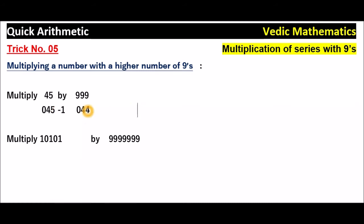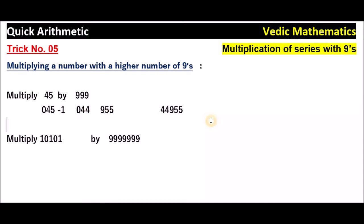Now subtract 044 from 999: 9 minus 0 is 9, 9 minus 4 is 5, 9 minus 4 is 5 — that is equal to 955. So 45 into 999 is equal to 044, 955. The answer is 44,955.